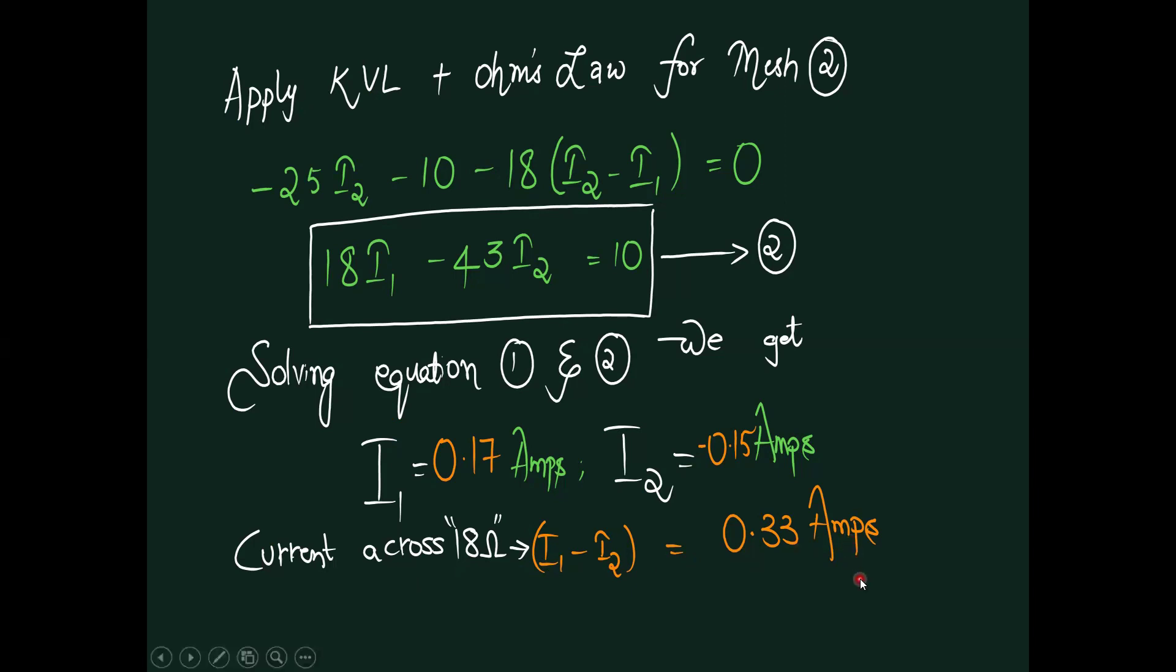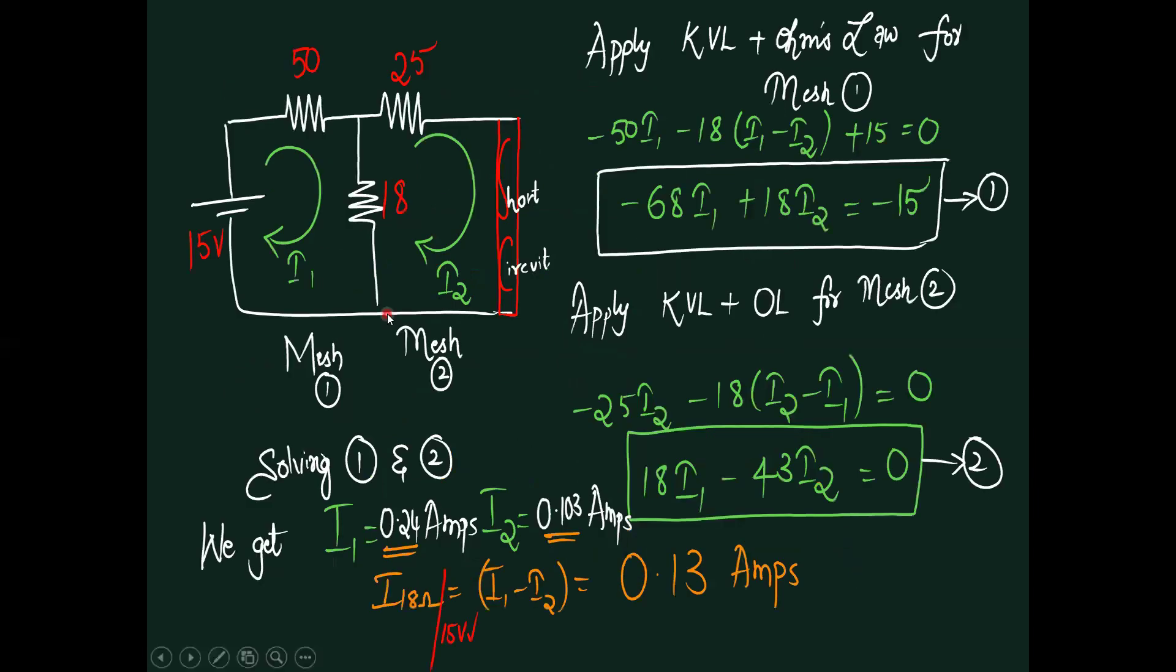In order to verify superposition theorem, I just want to consider only one voltage source at a time. If there occurs any other source, make it inactive. Here we are having 10 volts voltage source. I would like to make it inactive mode, that is short circuit. This is a new circuit we are going to solve for superposition theorem.